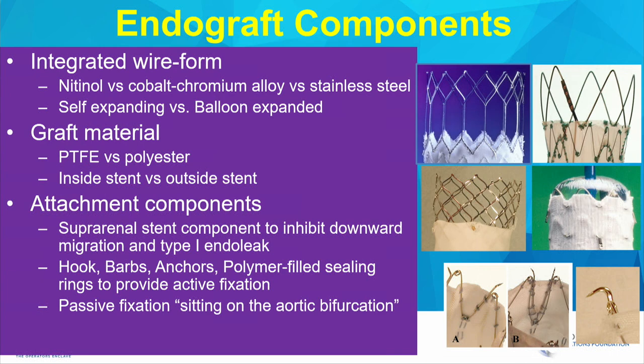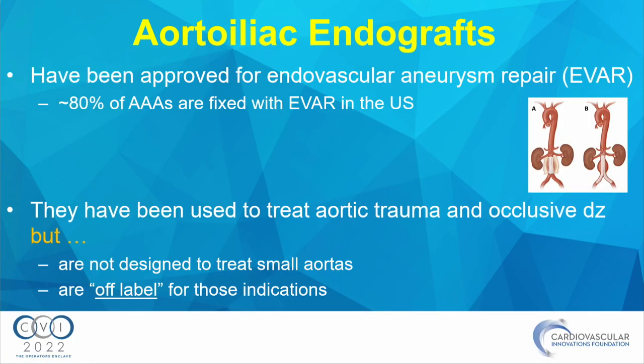There are various attachment components. These are important because the grafts were developed for large arteries to treat aneurysms, so there is a risk of migration. Many stent grafts have suprarenal stents, hooks, barbs, or anchors. Today, 80 to 85 percent of all abdominal aortic aneurysms are treated with endovascular aneurysm repair using these endografts. They have also been used to treat aortic trauma and occlusive disease, though they were not designed for small aortas and are off-label for these indications.